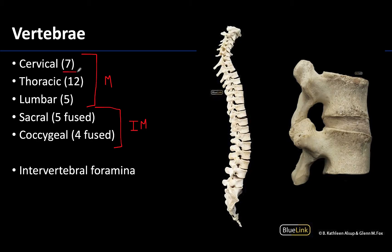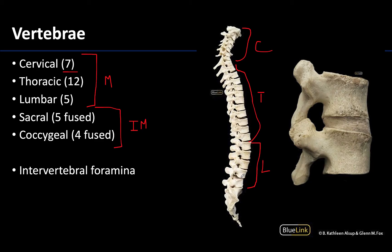There are seven cervical vertebrae located in the neck region. The 12 thoracic vertebrae are located in the thoracic region and are the ones that attach to the ribs. Then we have the five lumbar vertebrae, which are the largest of the movable vertebrae and are associated with the lower back.